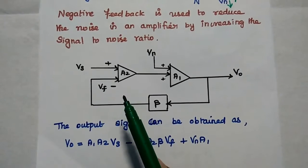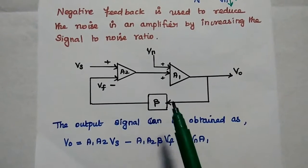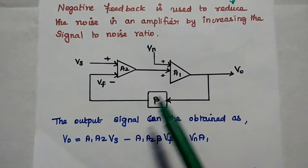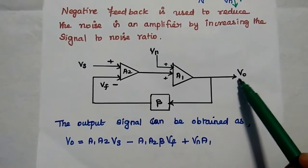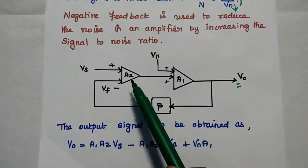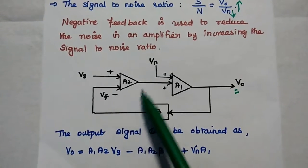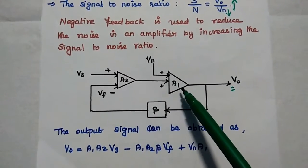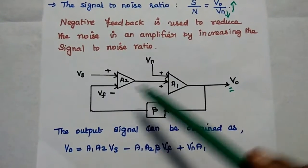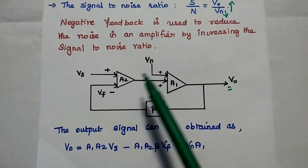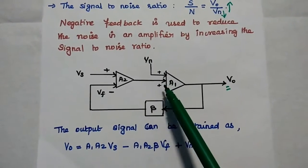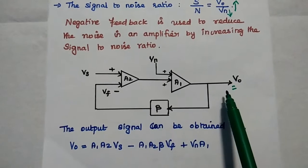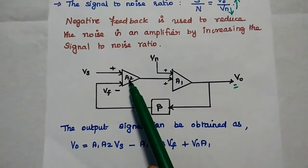To achieve this, one more amplifier is introduced, making two cascaded amplifier stages. From the diagram, the output V0 is obtained using a feedback signal given to the additional amplifier A2. Vs is directly given to A2, and the output of A2 is given to A1 as input. Noise is introduced at the A1 stage only; there is no noise in A2. The output V0 equals A1·A2·Vs minus A1·A2·Vf plus Vn·A1.